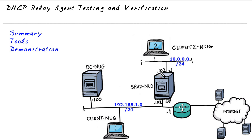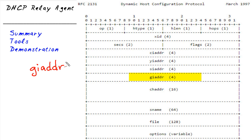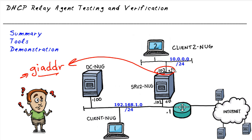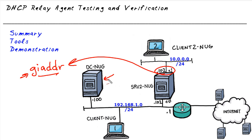This field is called GIADDR. What the DHCP relay agent is going to do is put its source IP address — where it heard the discover message coming from the client — into that field. So the IP packet is going to be sourced from 10.0.0.102 as it gets sent to DC-Nug, and the GIADDR field is also going to be set to 10.0.0.102. The reason we care is that the DHCP server looks at that field to determine which scope to use to hand out an IP address.